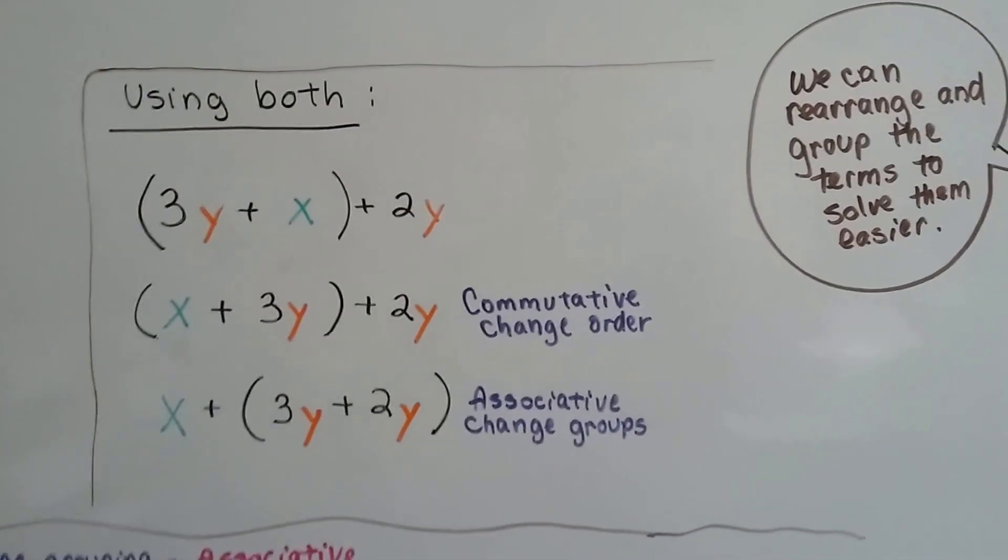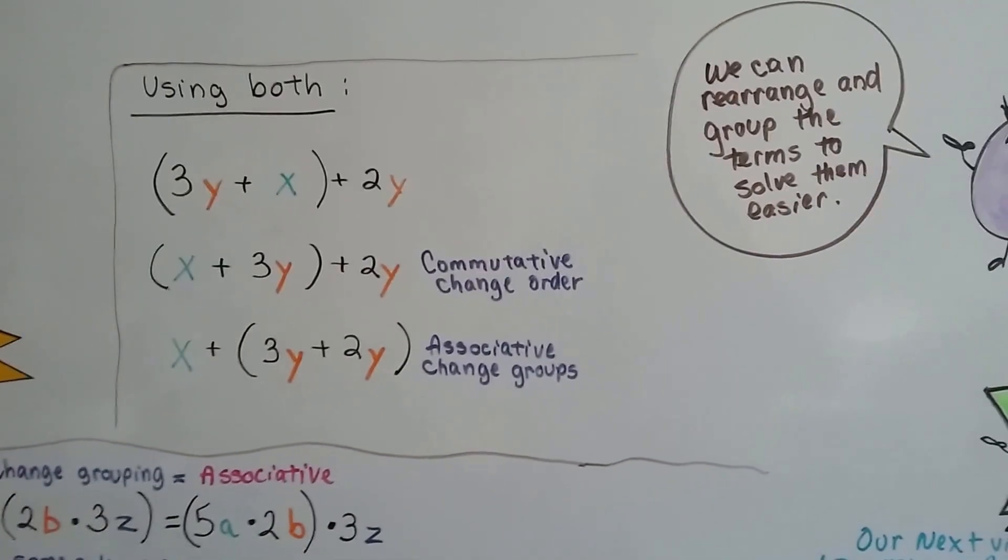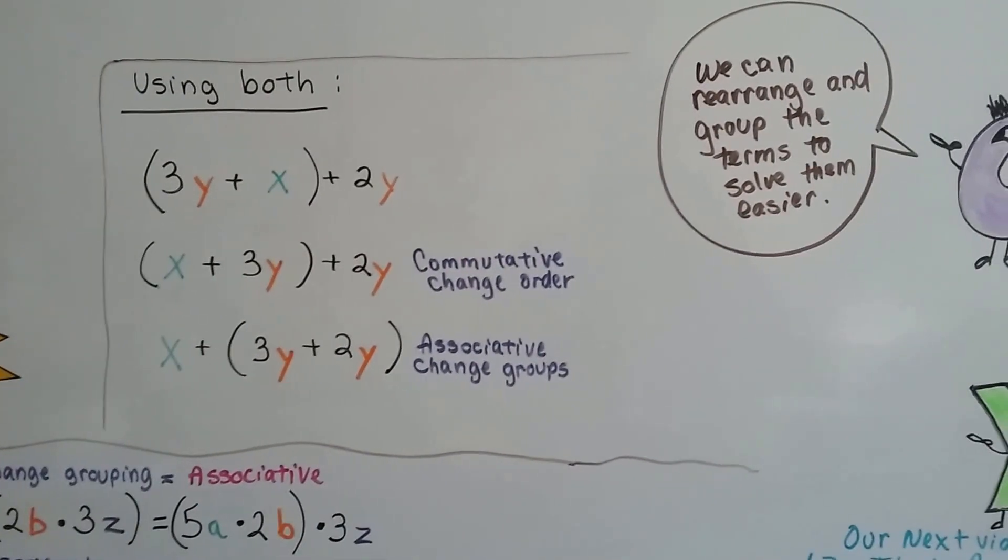So it goes from this to this by using both properties. We can rearrange and group the terms to solve them easier. That would be X plus 5Y. Combining like terms.